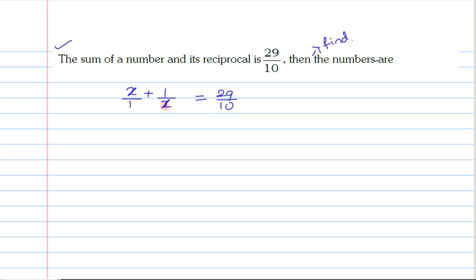Now, we got two terms in this LHS part of this equation. On taking LCM of this denominator, this can be written as x square plus 1 by x is equal to 29 by 10.